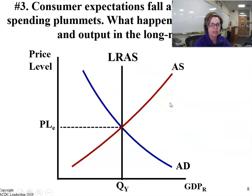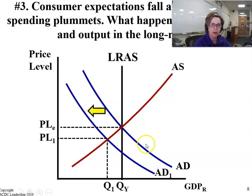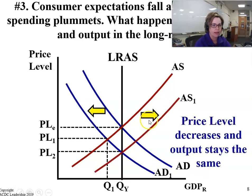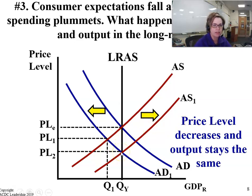What happens if consumer expectations fall and consumer spending plummets? What's going to happen in the long-run? In the short-run, we know aggregate demand shifts to the left. However, when aggregate demand shifts to the left, there will be an increase in unemployment, so aggregate supply will eventually shift back to the right. The price level falls and output stays the same.